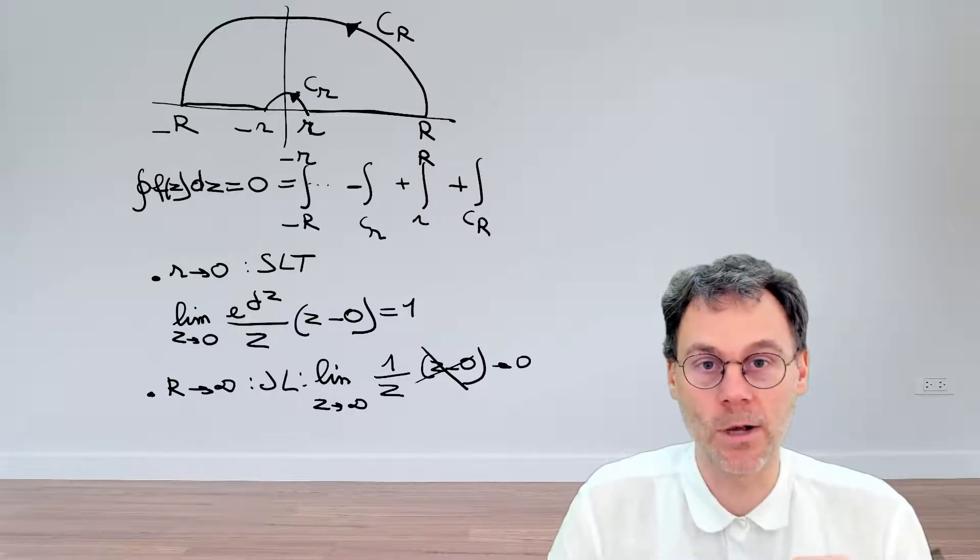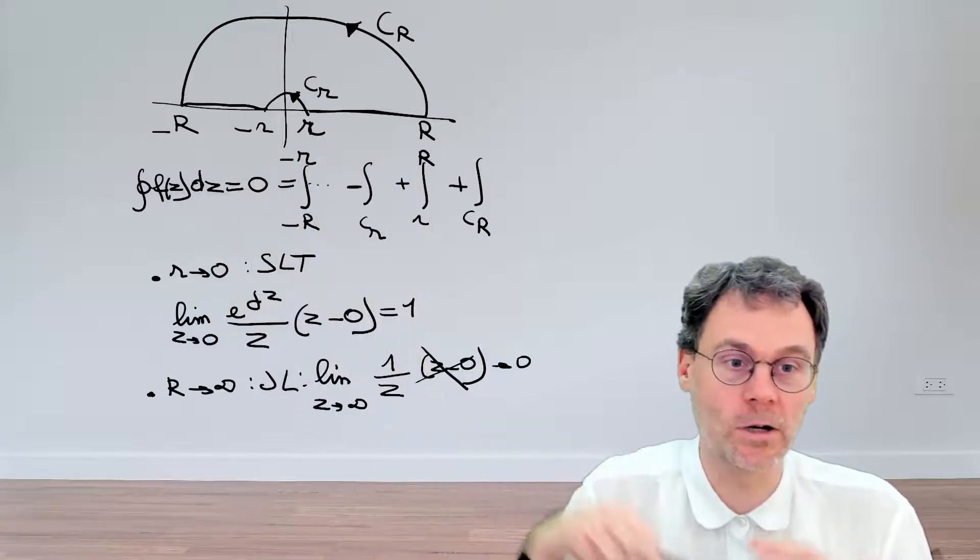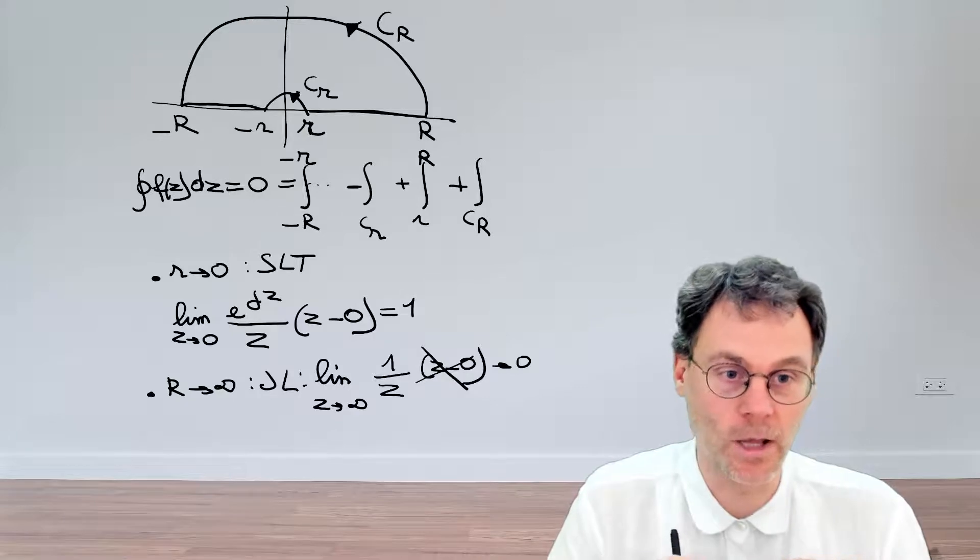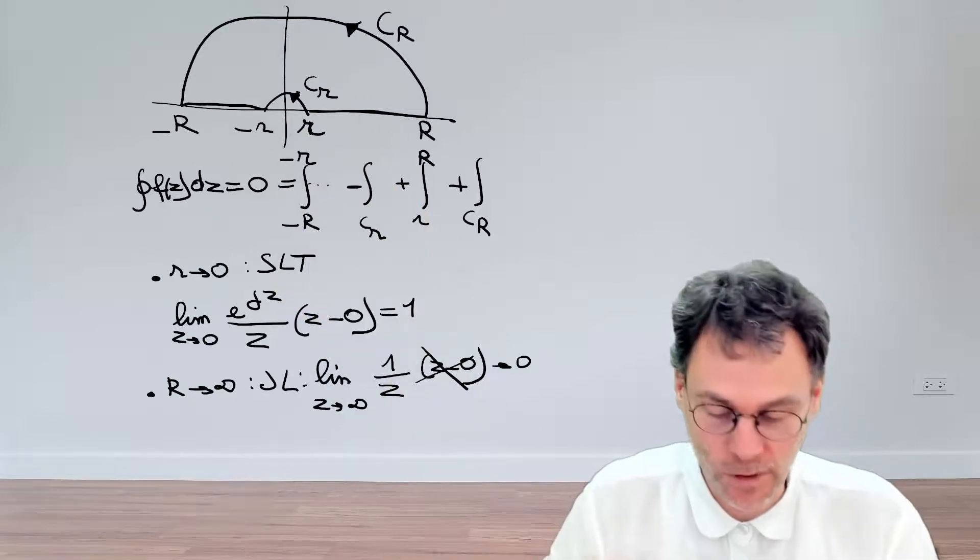So this means that Jordan's lemma tells us that we do not need to worry about this guy up there, because in the limit, it will just disappear. And also, we've closed it in the upper half plane, which is the right thing to do.